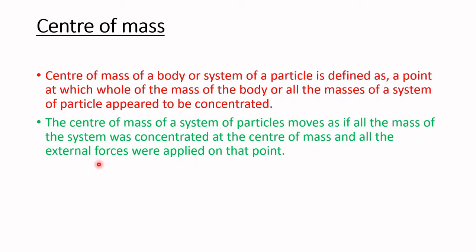Now we will understand what is meant by center of mass of a system of particles. Center of mass of a body or system of particles is defined as a point at which the whole mass of the body, or all the masses of a system of particles, are appearing to be concentrated. The center of mass moves as if all the mass of the system was concentrated at that point and all the external forces were applied on that point. Center of mass is similar to center of gravity, where center of gravity is an imaginary point in the body where the entire weight is concentrated, while center of mass is the point where the entire mass of the system appears to be concentrated.